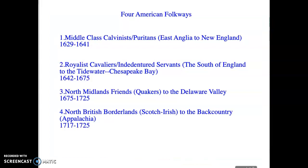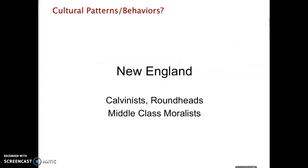We're going to start with the beginning — the emergence of the middle-class Calvinists and the Puritans who came to New England. They come first, from a particular part of England, bringing that culture with them. Think about the cultural patterns and behaviors that define New England as a whole — what someone from another part of the country would say is distinctive about New England. New Englanders don't just come from England generally; they come from a specific part of England.